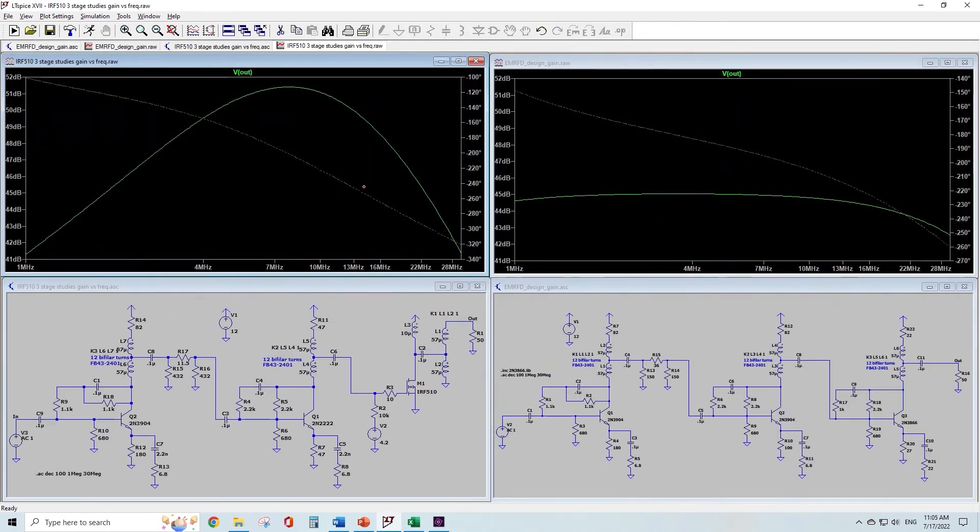And here's what the gain response looks like in a simple AC simulation. It's definitely not as flat as the base EMRFD amplifier, which I'm showing here plotted to the same scale. That's mostly because the IRF-510 is not feedback biased, so its gain is much higher at lower frequencies than it is at higher frequencies. I've partially compensated for that effect by fiddling with the two degradation caps that I mentioned earlier, but it's still not as flat as I'd like it.